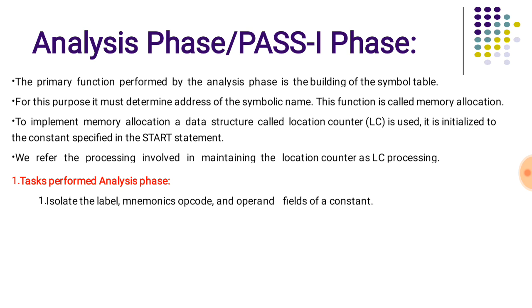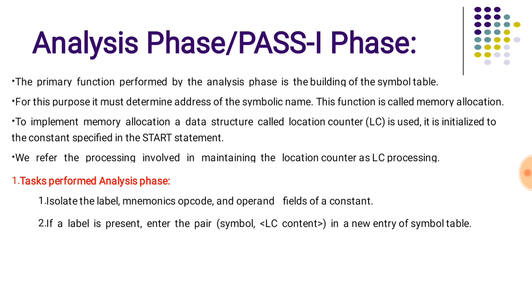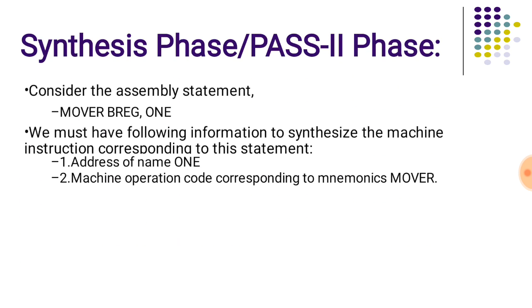The location counter processing tasks involved in the analysis phase are listed below. The first task is to isolate the label, mnemonic opcode, and operand field or constant from the assembly language statement. If a label is present, we make an entry into the symbol table with its corresponding address. We also check the validity of mnemonics by comparing them with the operation code table, and we perform location counter processing.